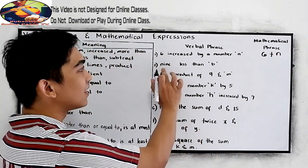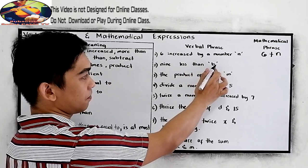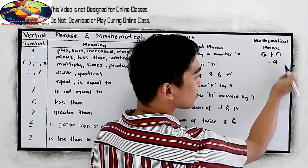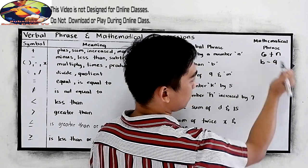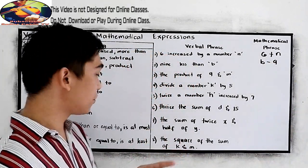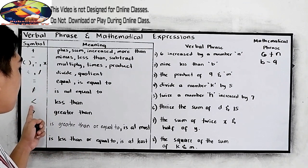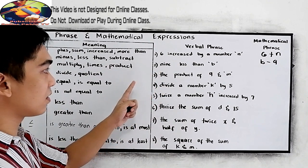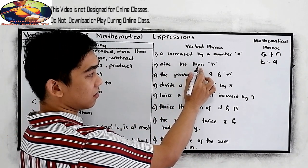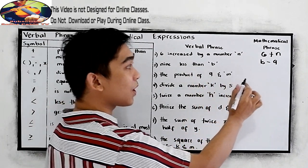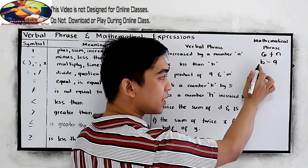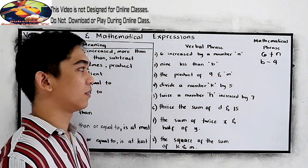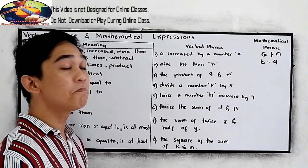Next, nine less than b. Do not be confused in our symbol here. In this case, we are talking about nine less than b. We are going to subtract nine from b. For number two, b minus nine.